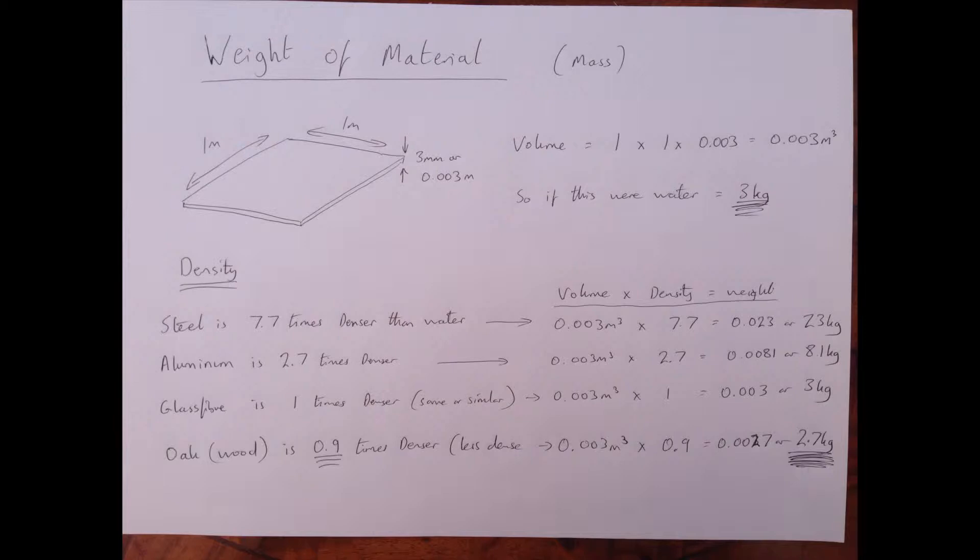But steel for example is between 7.7 and 8 times heavier than water, it's denser than water. So 7.7 times 3 and you come up with 23 kilograms. So that sheet of steel, 1 meter by 1 meter by 3 millimeters, is 23 kilograms. Aluminum is a lot less dense, so that's only 2.7 times denser, so it will come out around about 8 kilograms.